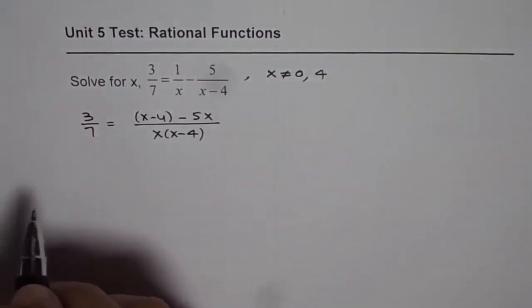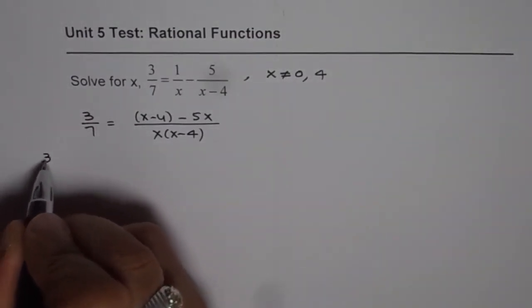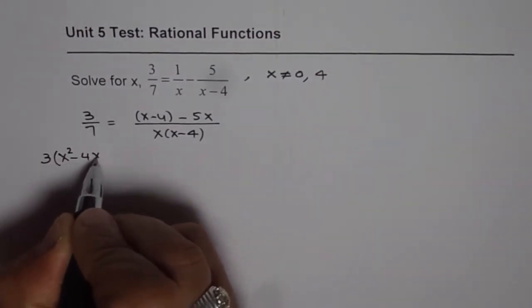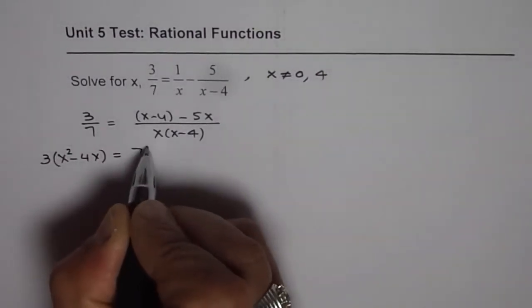And now we can cross multiply. So we have 3 times x square minus 4x equals 7 times...